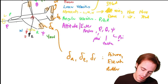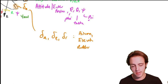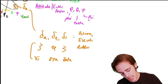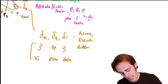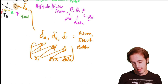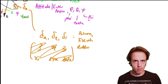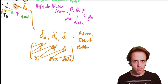In some older textbooks, principally from Europe, you might see the notation xi, eta, and zeta instead of delta_a, delta_e, and delta_r. We are not going to use that, but I want you guys to be aware of it. That notation is very confusing because xi, eta, and zeta don't look distinct enough and aren't in an intuitive alphabetical order, whereas it's easy to see that A, E, and R stand for aileron, elevator, and rudder.